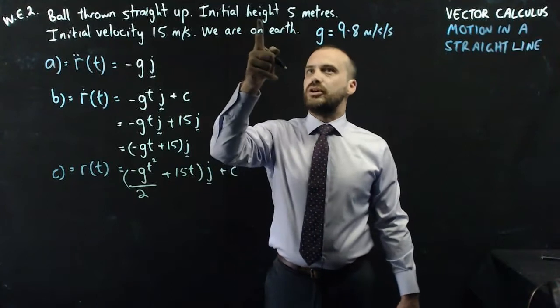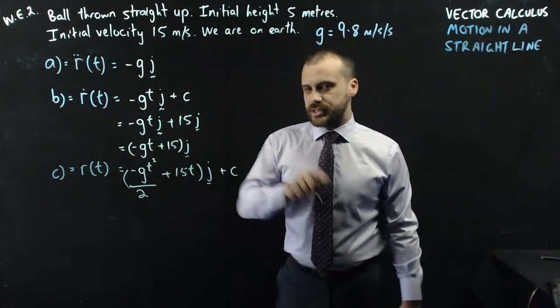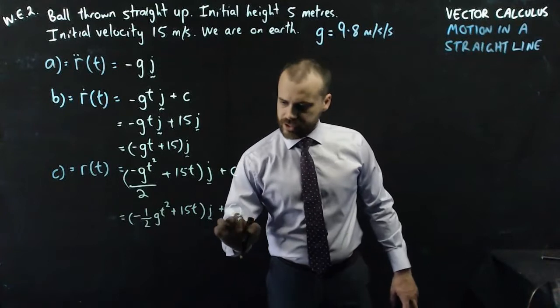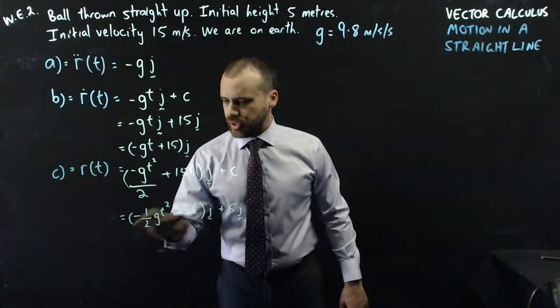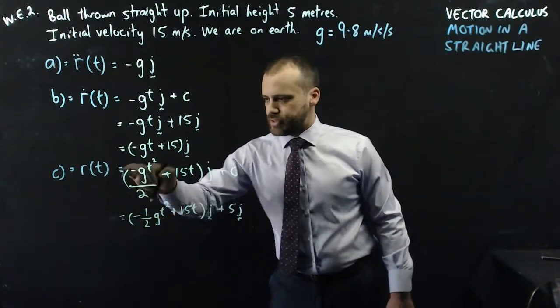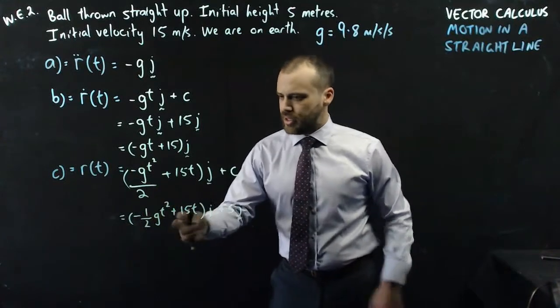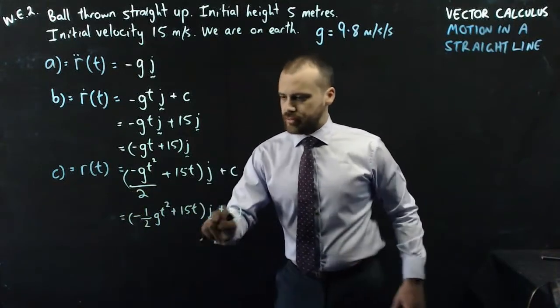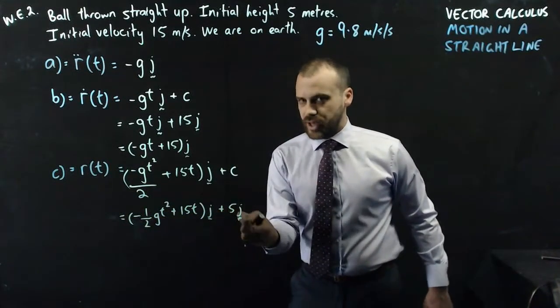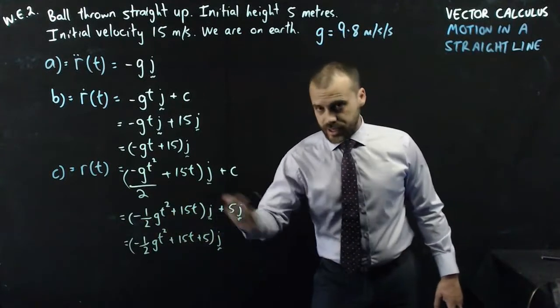And what's that plus c going to be? Well, our initial height was 5 meters, and that's what our plus c is going to be. So we have our plus 5 here. Now I've just gone with the stylistic choice here of -½ instead of divide by 2. Much neater. And now I'm just going to smush all this together because we've got all of this j, all of that j, and this is our displacement function.